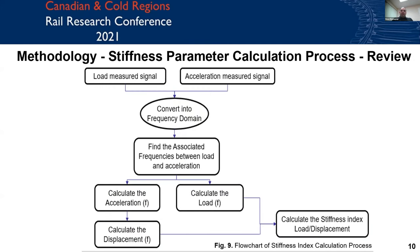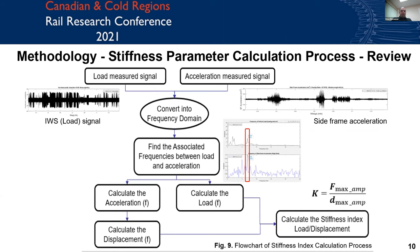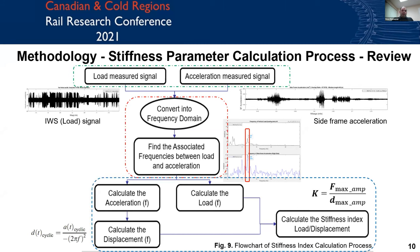The following flowchart shows how stiffness can be calculated using the load and acceleration data. It elaborates on the three main steps: first, obtaining the load and acceleration signals and converting them into the frequency domain to find the dominant frequencies; then calculating the deflection and stiffness index for the section to evaluate the subgrade condition.